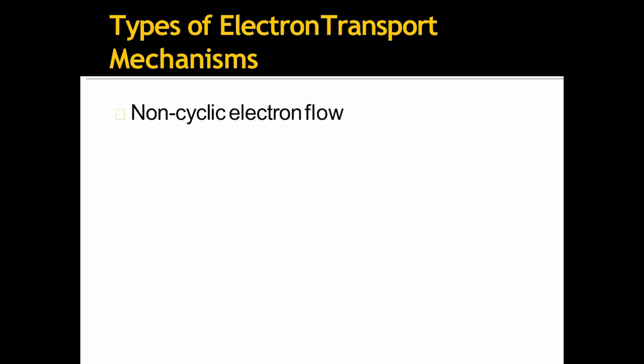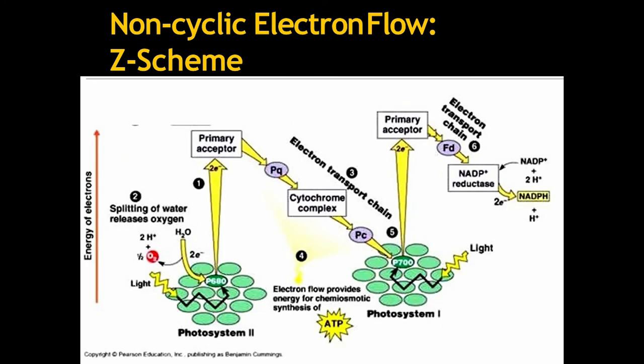Electron transport mechanisms are of two types. Non-cyclic electron flow and cyclic electron flow. This is the non-cyclic electron flow or the Z scheme. Popularly known as Z scheme because of this structure. Look, it is almost look like Z. We have already discussed about this in detail in my previous electron transport chain structures. This is the same.